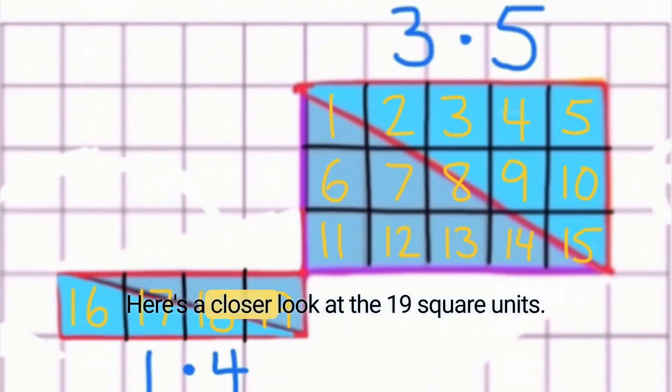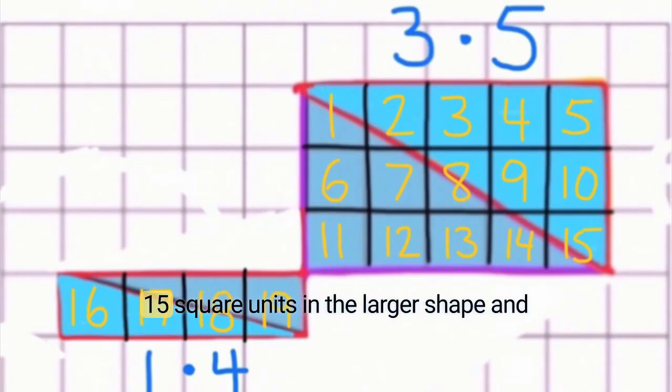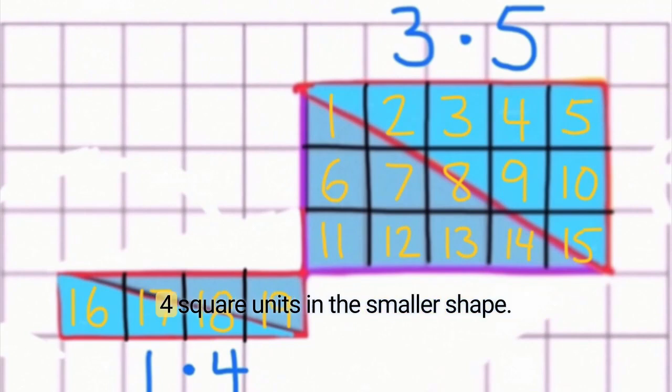Here's a closer look at the 19 square units: 15 square units in the larger shape and 4 square units in the smaller shape.